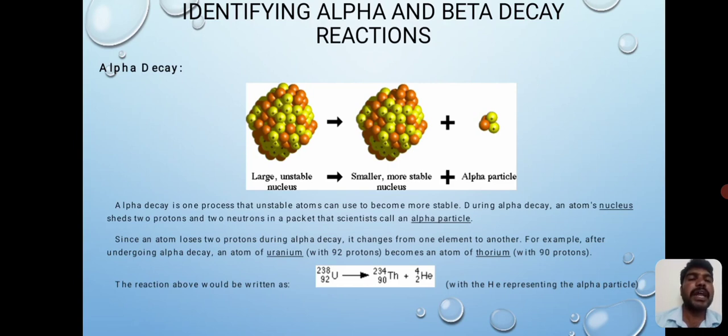For example, after undergoing alpha decay, an atom of uranium becomes an atom of thorium. The reaction above would be written as uranium-238 undergoes alpha decay, thorium-234 is formed, and then a helium is emitted. Here, the helium molecule is called the alpha particle.